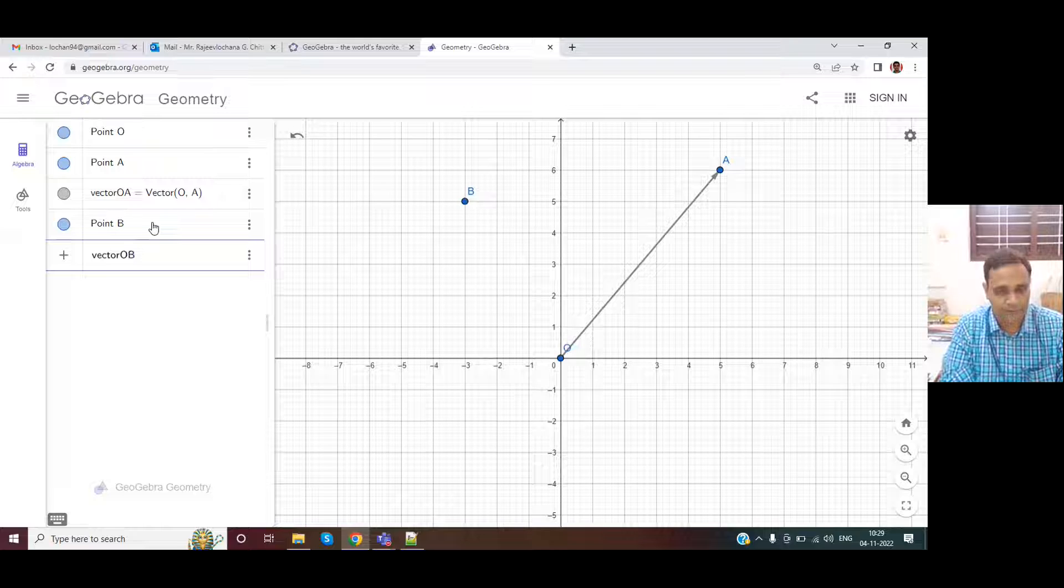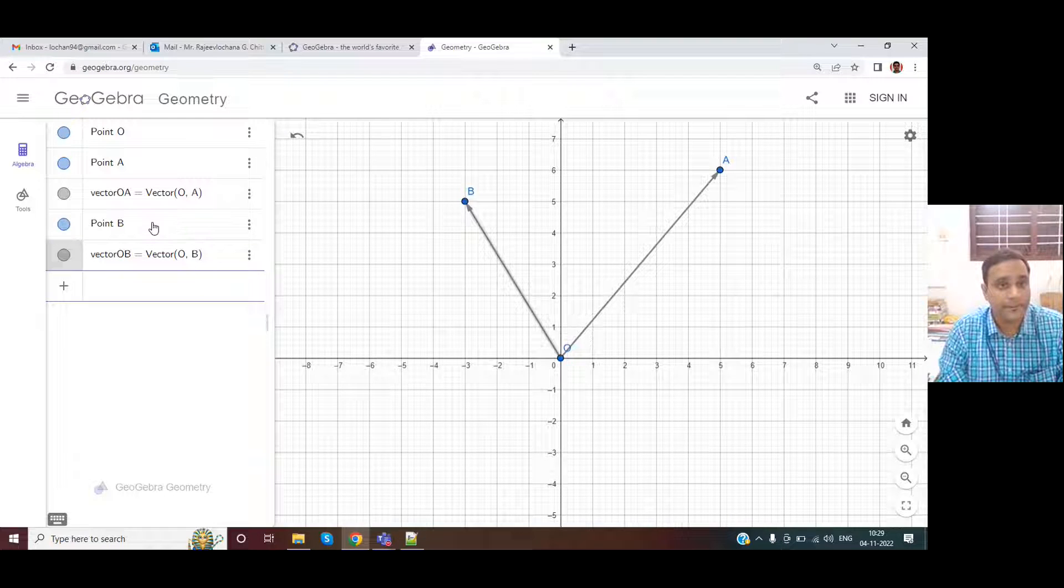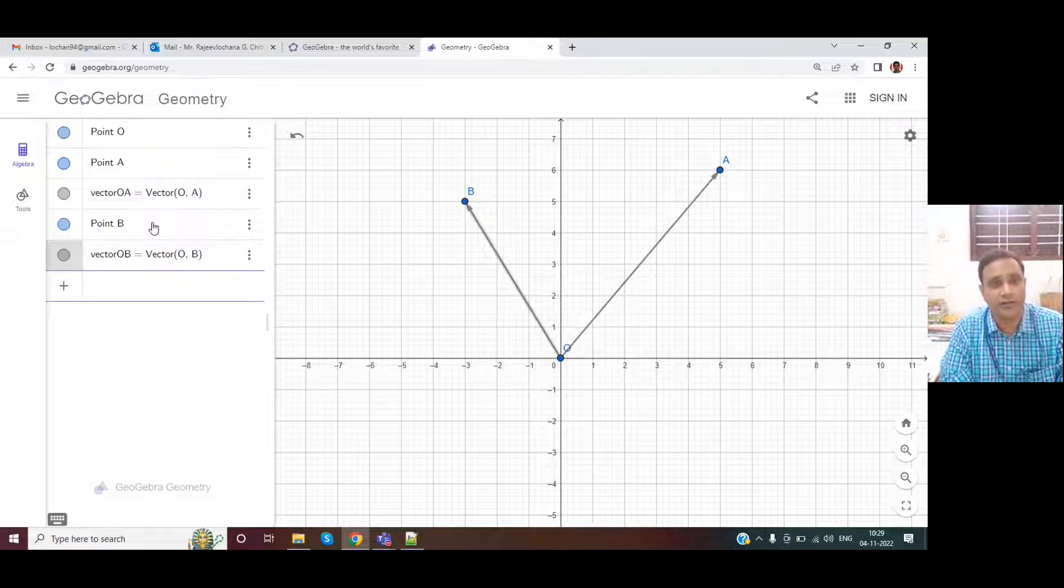Vector B. Vector B is just a vector between O and B. Okay, so there we have two vectors.